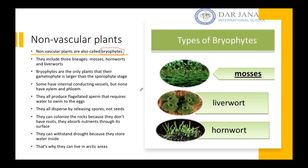Bryophytes are the only plants where their gametophyte stage is larger than their sporophyte stage. They do not have xylem and phloem, because they are non-vascular. Vascular comes from vascular tissue — that is the xylem and phloem.